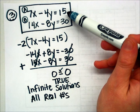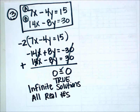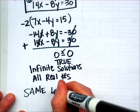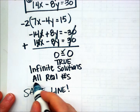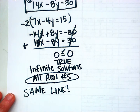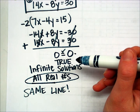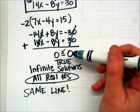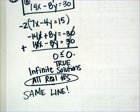7x minus 4y equals 15 — if I graph that, and then I graph 14x minus 8y equals 30, I know those would be the same line. The solution to the system is all real numbers. If I had gotten a false statement, like 6 equals 0, then the answer would be there is no solution, and I would know the lines didn't intersect, meaning they were parallel.